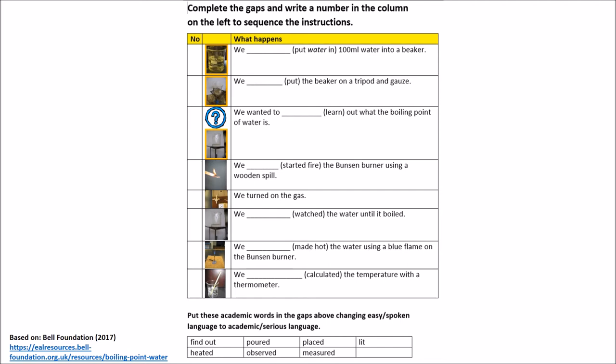The lowest level, red, as you can see here, contains images and non-academic words, for example, watched or started fire, in brackets, next to the gaps, as well as the academic words needed in a box at the bottom of the page. Following this, the students need to write the sequence in which the instructions, these events, take place in the first column on the left.